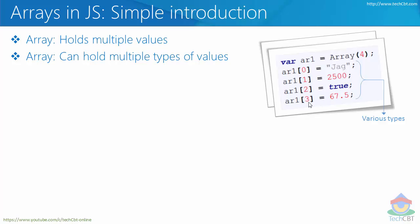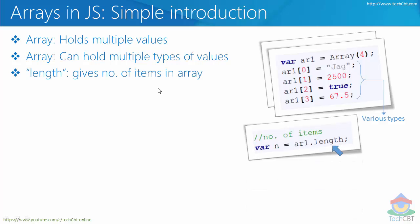There is one particular property called length, which essentially gives the number of elements or items available in a particular array. So in this case I can say arr1.length, which gives you the count or number of elements available in that array. Once that value is returned from the property, you can assign it to a variable, alert it, or reuse it further. Length is a property of an array that gives us the number of items available.